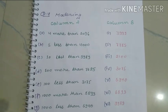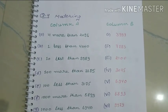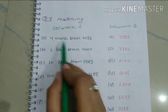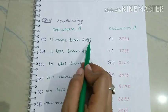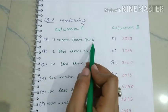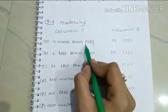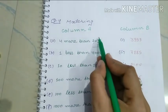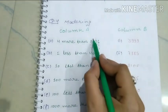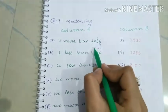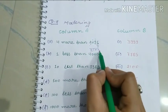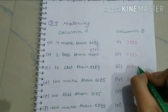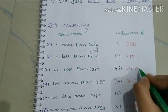Question 4 is a matching exercise. The first item: 4 more than 2096. Adding 4 to 2096: 6 plus 4 is 10, carry 1; 9 plus 1 is 10, carry 1; giving us 2100. So we match this to answer A.